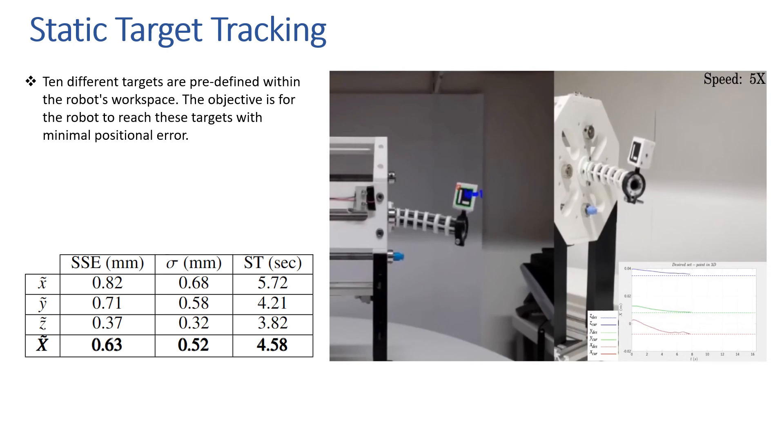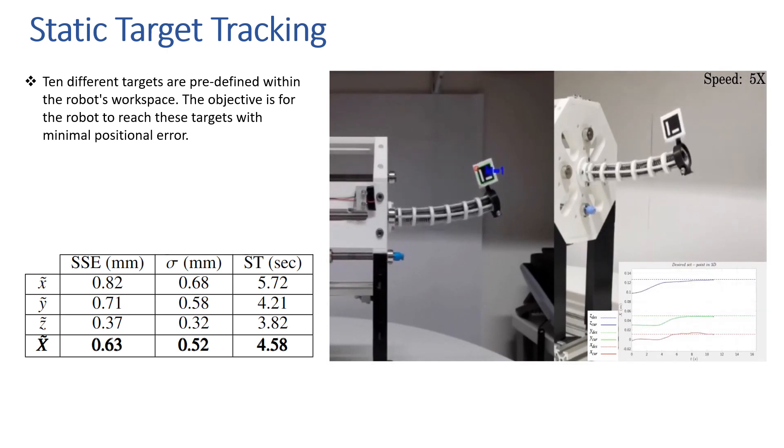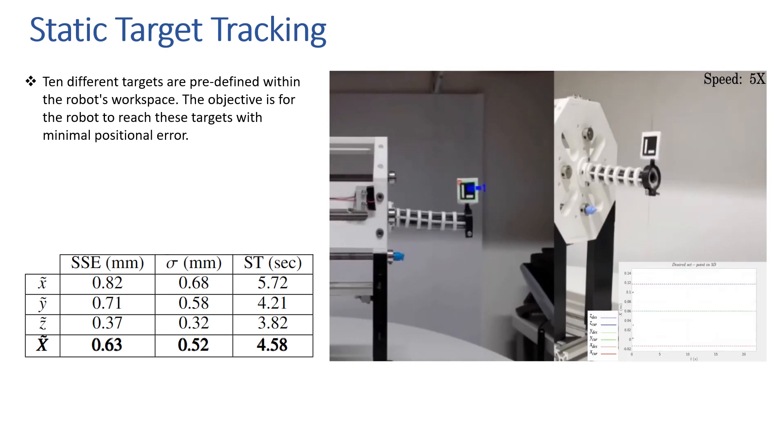In the first experiment, nine various static targets are defined across the workspace and the robot is expected to reach them with the minimum amount of position error. Steady-state error, standard deviation, and settling time are measured and presented in the table.